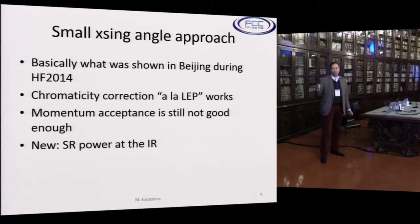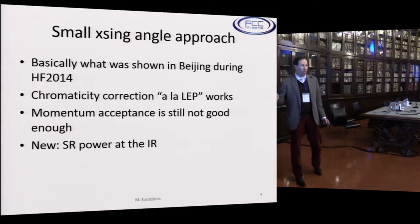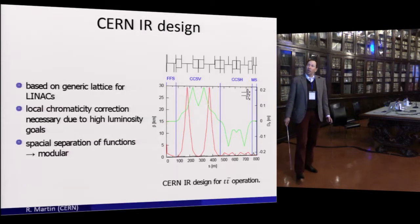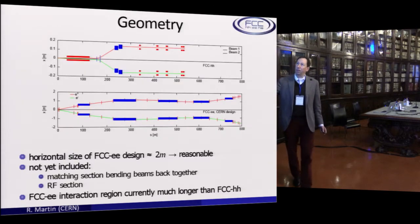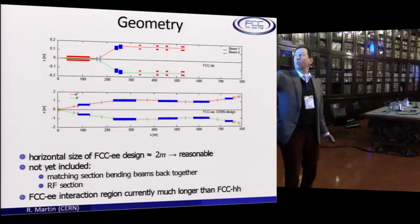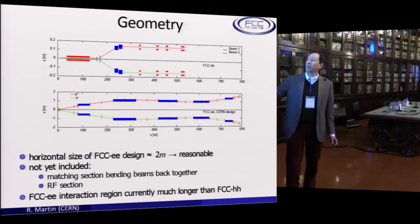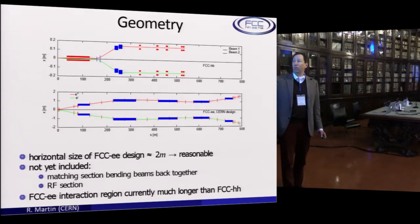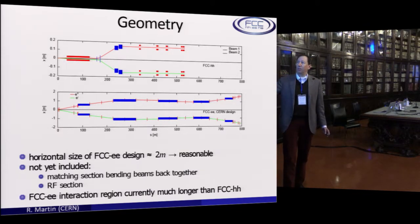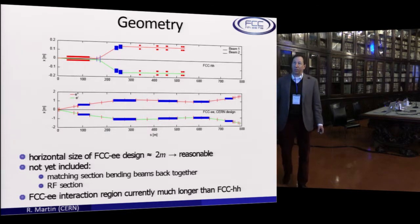What is new and has not been shown before is the synchrotron radiation power at the interaction region. This is the interaction point here, and this is 800 meters from it. This is the design for FCC-hh, and this is the CERN design for FCC-ee. Strangely, the FCC-ee interaction region design is actually longer than the one for the 100 TeV machine.